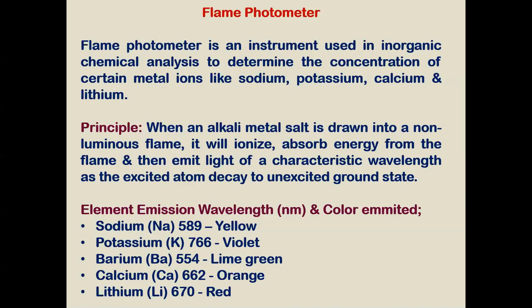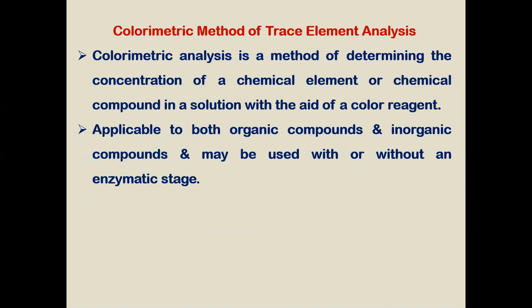The concentration of certain minerals — sodium, potassium, calcium, and lithium — can be determined by flame photometry. The principle of the flame photometer is that when a metal salt is drawn into a non-luminous flame, it will ionize, absorb energy from the flame, and emit light characteristic of that element. As the excited atom decays to its unexcited ground state, different elements emit different wavelengths and colors: sodium at 589 nm (yellow), potassium at 766 nm (violet), barium at 554 nm (green), calcium at 622 nm (orange), and lithium at 670 nm (red).